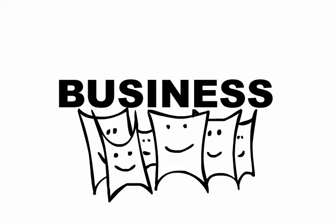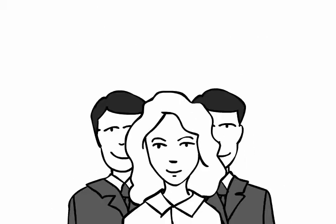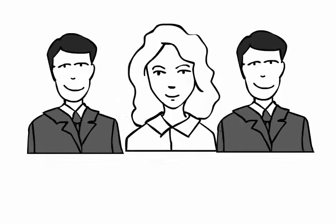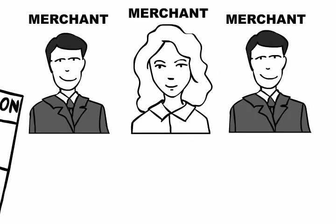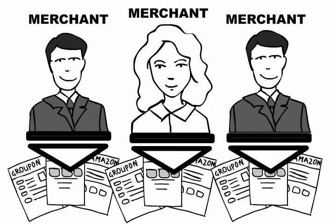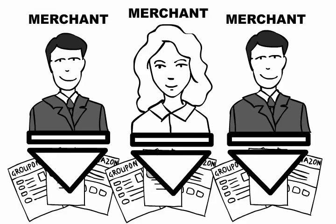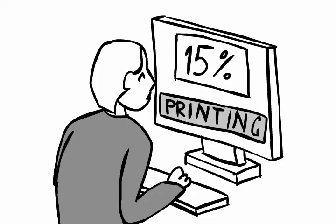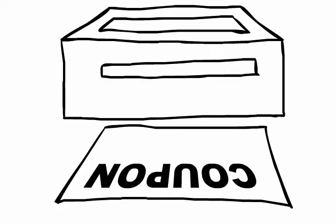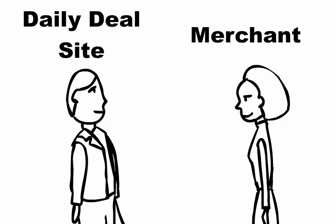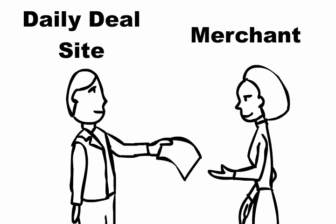In the coupon and daily deal business, merchants provide their offers to multiple daily deal sites. Customers buy the deals and print vouchers out, and each site provides a list of vouchers back to the merchants.